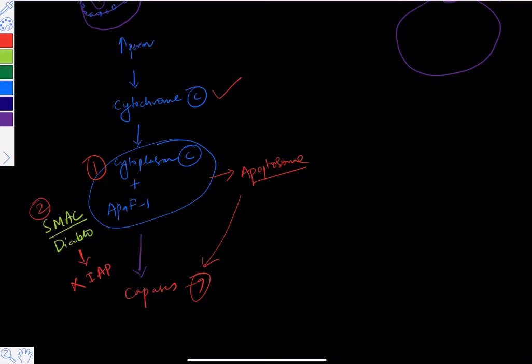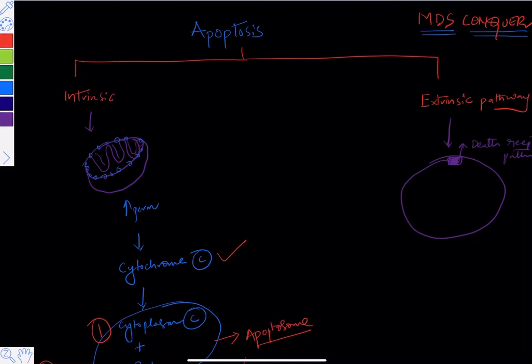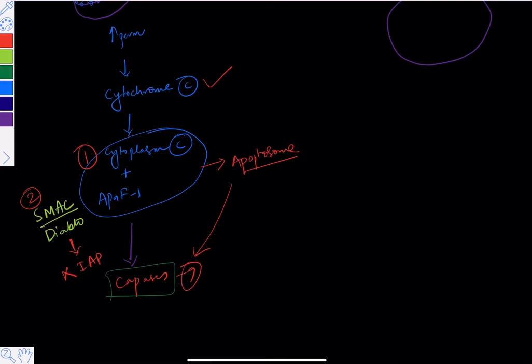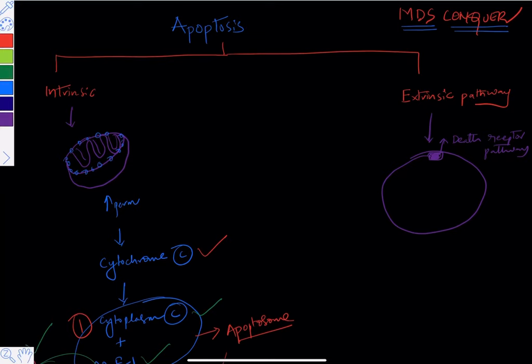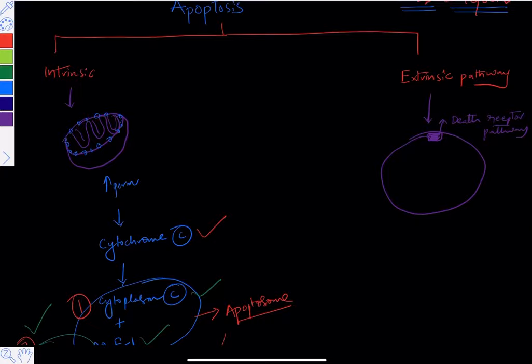To recap the intrinsic pathway: inside the mitochondria, permeability increases. Cytochrome c comes out and binds with APAF1 to form the apoptosome, which activates caspase 9. The second modality is SMAC or DIABLO leaking out and inhibiting the inhibiting factor IAP, also activating caspase 9. So caspase 9 is the end product of the intrinsic pathway.